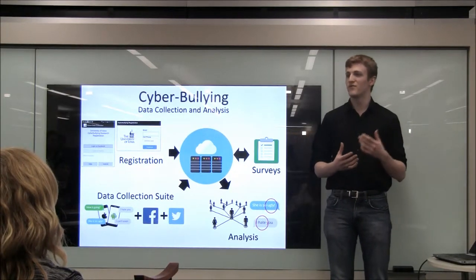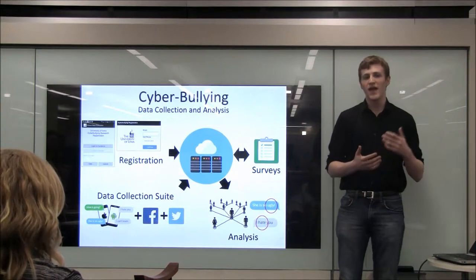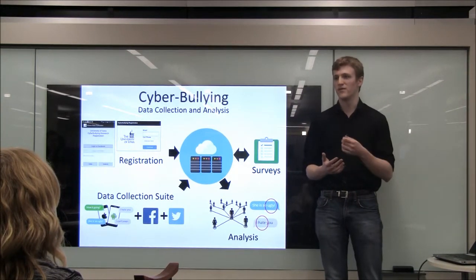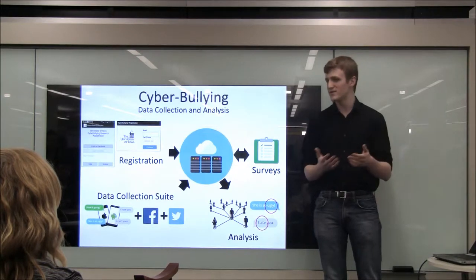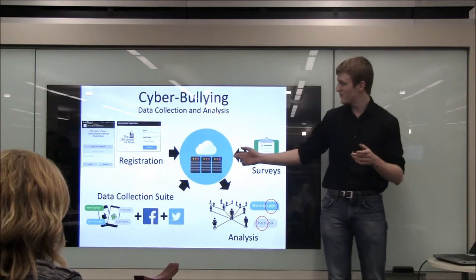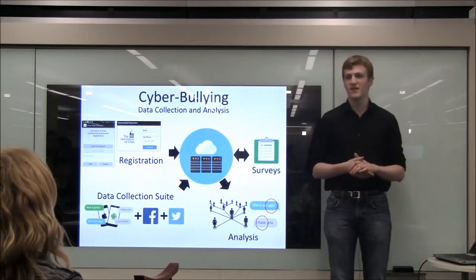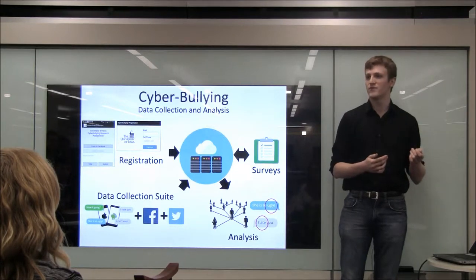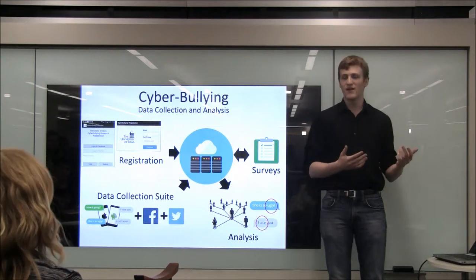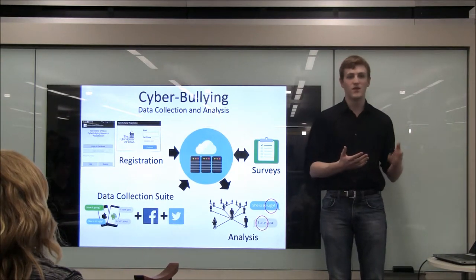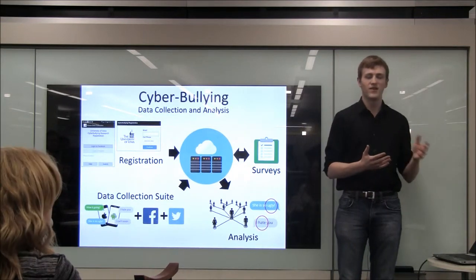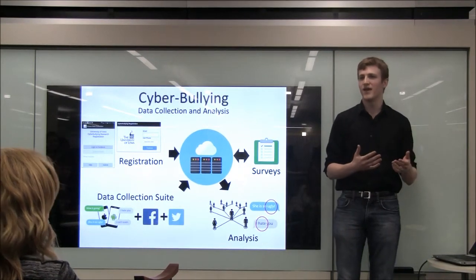When people sign up for our study, they do so using our registration app. When they do that, they sign in with their Facebook account, and they give us a key to part of their account. We then upload that key along with some other information like their phone number and email address to our server. Our server then takes that information and passes it off to our data collection suite, which uses that key to unlock their Facebook account and get the messages and posts that they've made. We then download all of that information along with text messages and tweets. We encrypt the data to protect the privacy of our users, and at this stage we can format it and manipulate it however we want to do the analysis of the data.